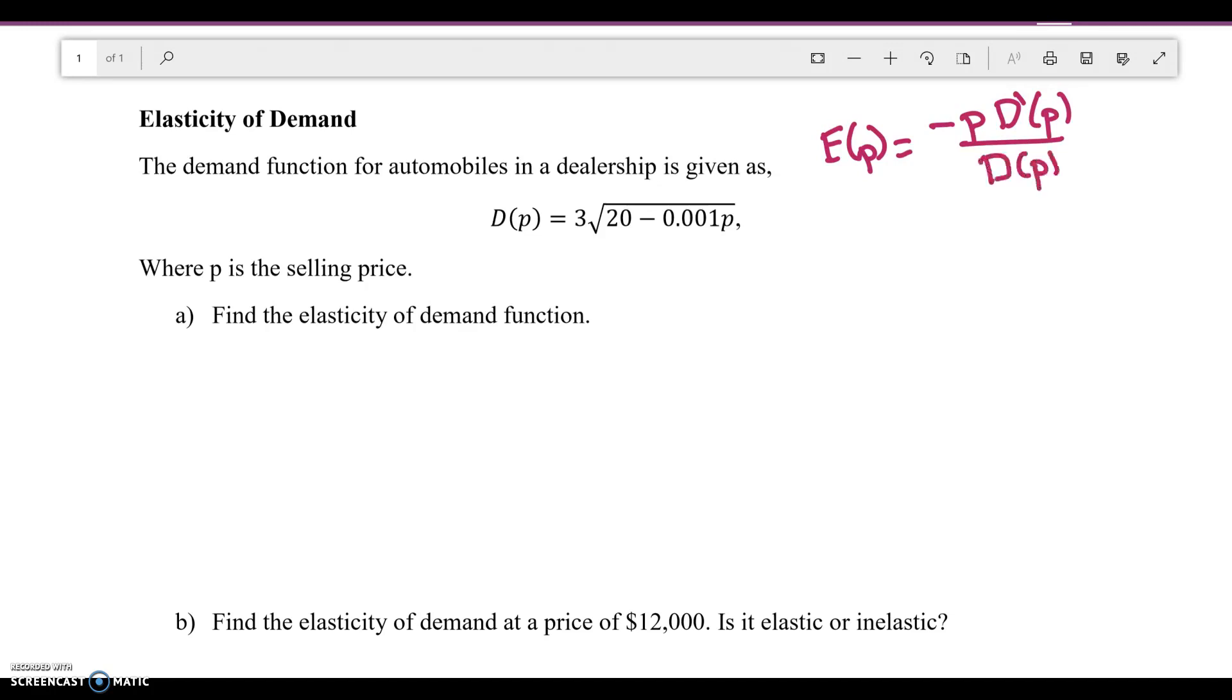So here, E just stands for elasticity, P here is going to be the price, and then D of P is just demand. So usually that's given to you. D of P is always going to be given to you, but this is a formula that I will give you guys on the exam so you don't need to memorize it.